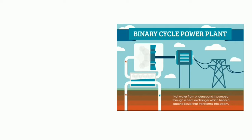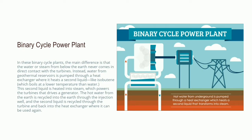In a binary cycle power plant, water is used at a lower temperature of approximately 225 to 360 degrees Fahrenheit. Using a heat exchanger and a secondary liquid, the turbine is turned to power the generator. In binary cycle, secondary liquids like ammonia, isobutane, etc. can be used, which have a low boiling point. The secondary liquid is maintained in a low-pressure reservoir. The heat exchanger supplies geothermal heat to the secondary liquid; due to the low pressure, the secondary liquid boils quickly and is converted into vapour, which is used to run the turbine and generator.